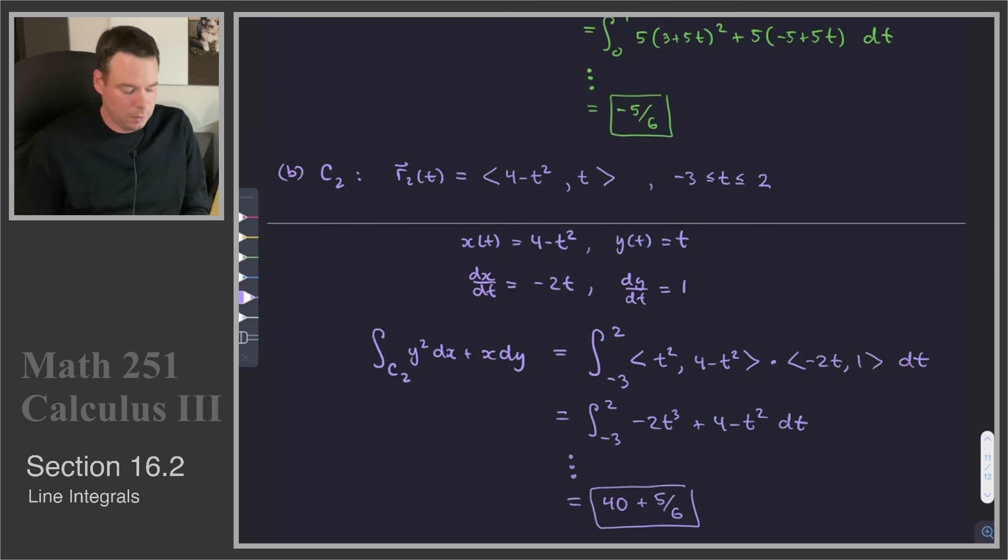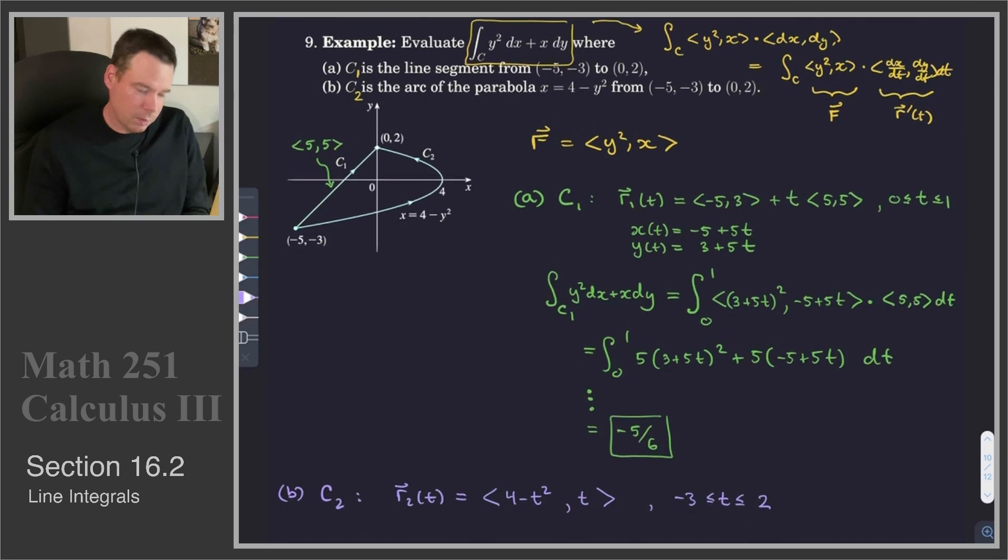One thing to note is that even though we were integrating our vector field over two curves that had the same initial point and the same endpoint, the values ended up being different. What that means is the line integral not only depended on the initial and ending points, but also depended on the path you took. So it was path dependent. It turns out that the vector fields where this does not happen—the vector fields that are path independent—those are actually important for us. Those are the things we're going to explore in later sections.